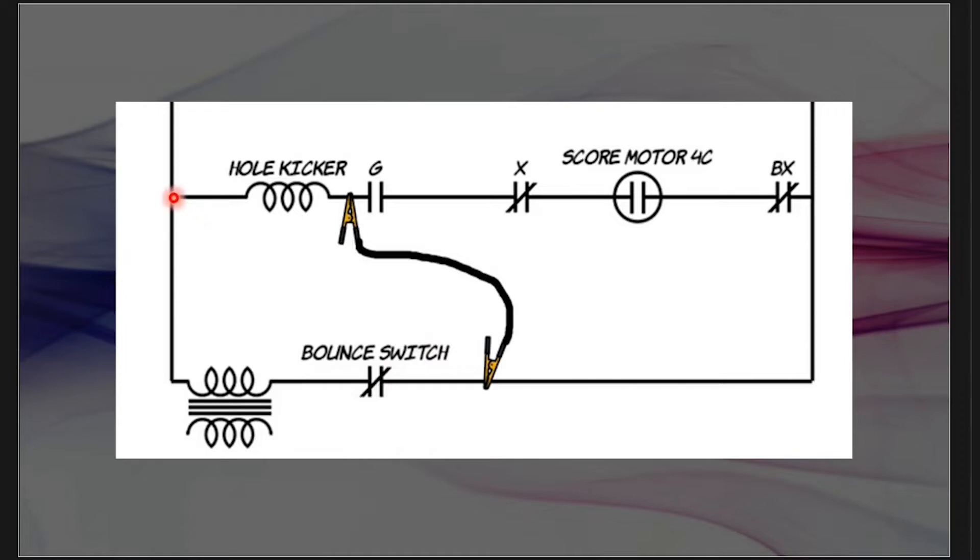What this alligator clip is doing is it's bypassing G, X, score motor 4C and BX. So the path that's going to take is it's going to go through the solenoid, come down, take the least amount of resistance and come here. If I just touch this bounce switch and this coil fires, it tells me first of all, my coil is good. That's one thing I want to check right away. And then I know my problem is going to be one of these four switches.